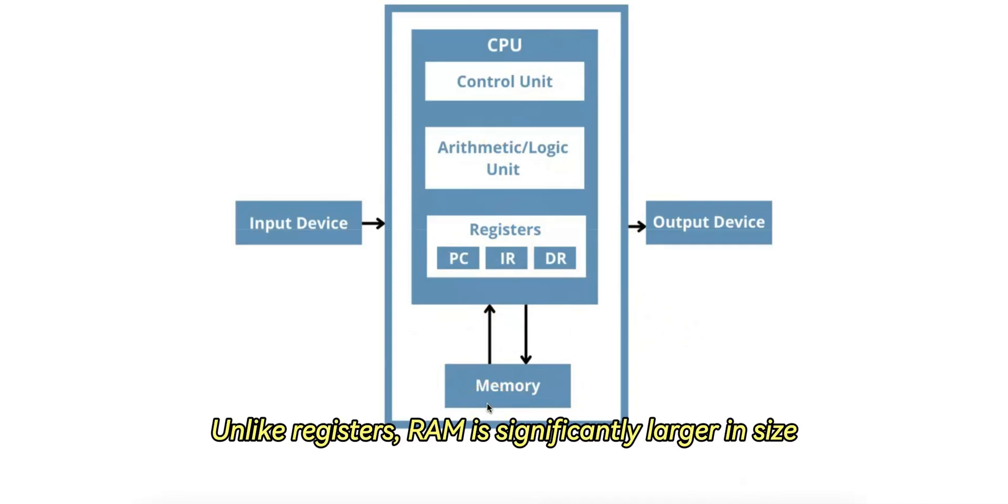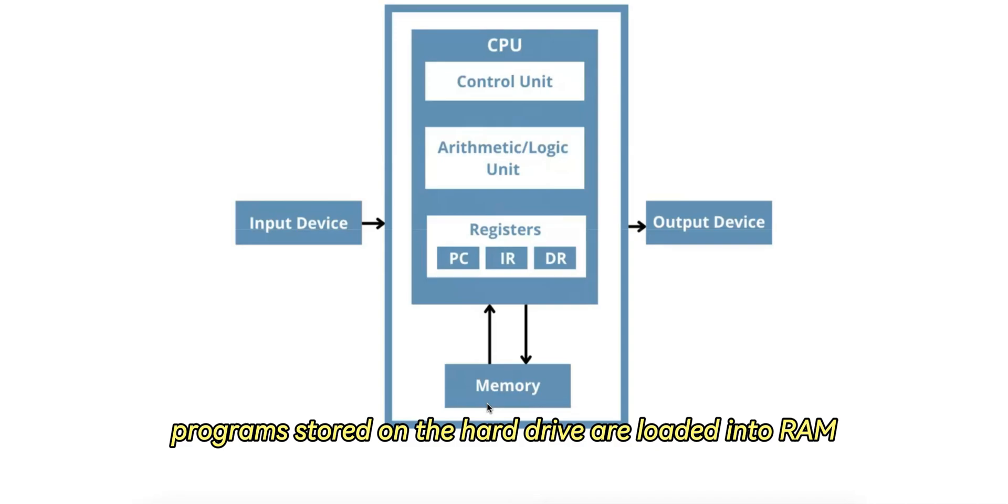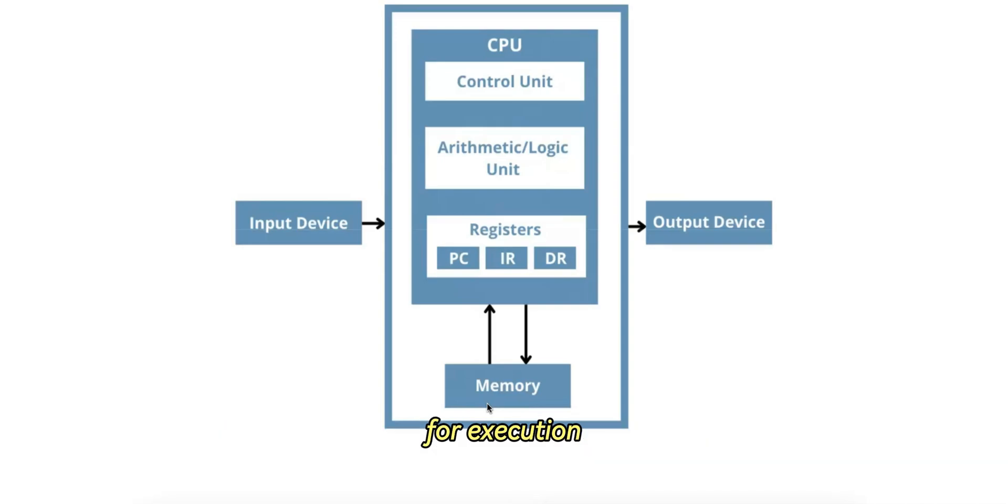Unlike registers, RAM is significantly larger in size, typically measured in gigabytes. It is used to store the operating system and active programs. Data structures, such as arrays, that are too large to fit in registers, are also stored in data memory.